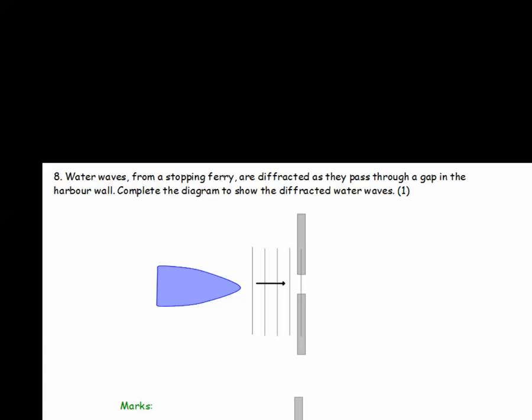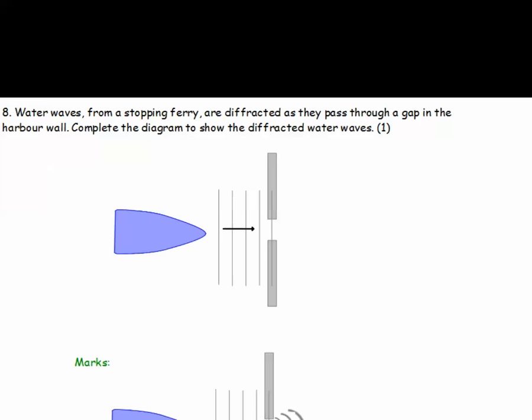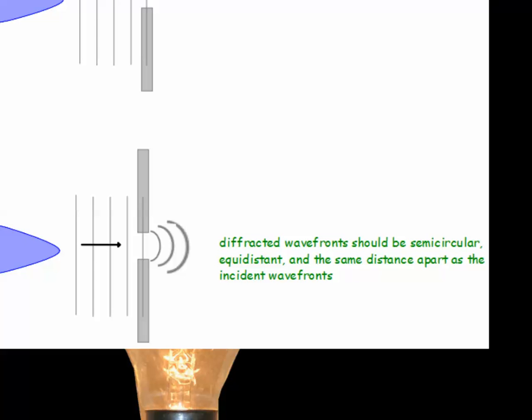Question 8. Water waves from a stopping ferry are diffracted as they pass through a gap in the harbour wall. Complete the diagram to show the diffracted water waves. And here's the answer. Your drawing should look like this. The diffracted wave fronts should be semi-circular. They should be equidistant. And they should be the same distance apart as the incident wave fronts.